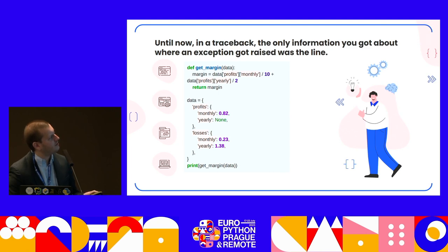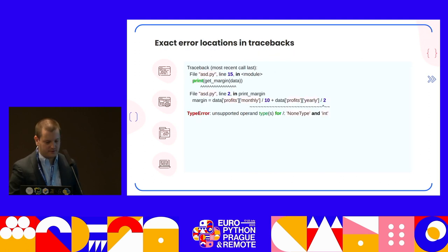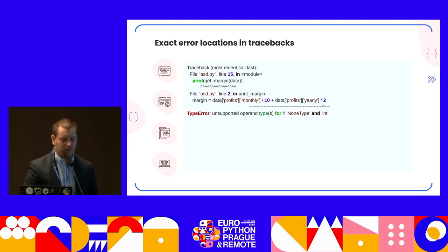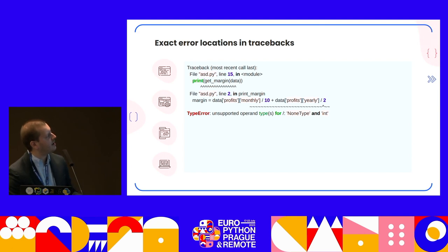Until now in the traceback, the only information you got about where an exception occurred was the line. But now Python shows the line and also the reason for the error. In this example we have the unsupported operand type for division — we cannot divide a string type and an integer. We now have the line, the exact error on line 2, and the type error. I think this is pretty cool.